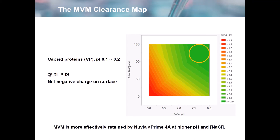Now I'm going to discuss the results of the spin column experiments. Here you have the MVM clearance map, showing from pH 6 to 8 and 0 to 150 millimolar salt. As MVM is a capsid protein with a PI of 6.1 to 6.2, a pH greater than the PI should leave a net negative charge on the surface. The contour plot shows that the upper right quadrant of higher pH and higher salt leads to larger MVM LRV.